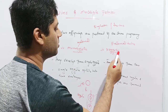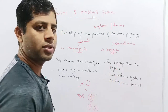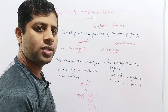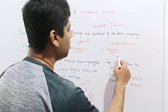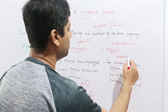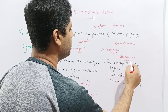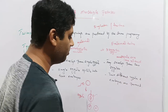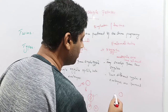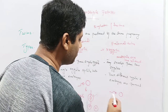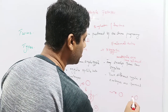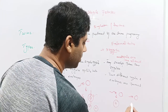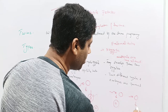In the case of dizygotic twins, they develop from two zygotes, meaning two different zygotes and embryos are formed. In this case, multiple ova are released from the female. For example, the female releases two ova — one ovum is fertilized by one sperm and the second ovum is also fertilized by a different sperm. So this forms one zygote and the second fertilization also forms another zygote.